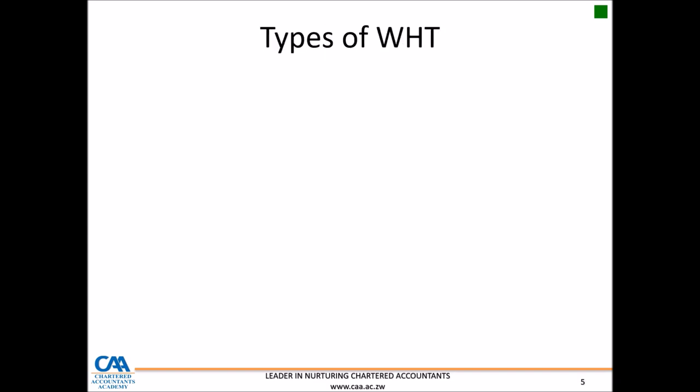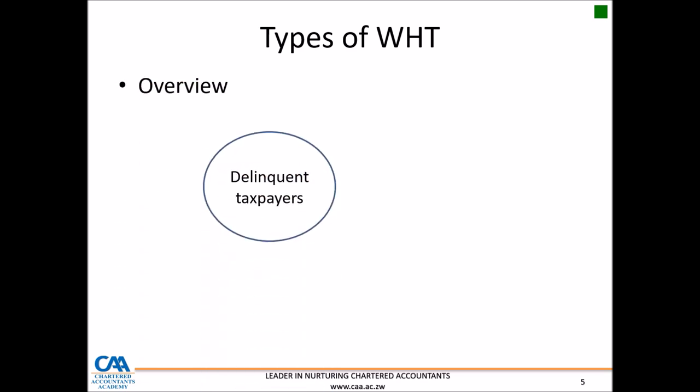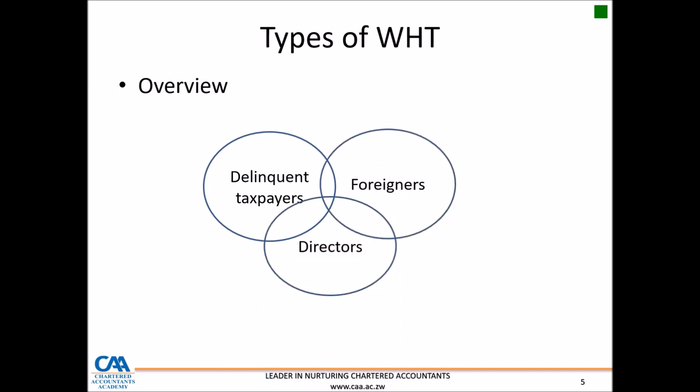What are the types of withholding taxes that are available? There are three broad categories that withholding taxes try to cover, which are mainly delinquent taxpayers — as I said, these are not registered taxpayers — and foreigners, and also directors. These are the three broad categories covered under withholding taxes.